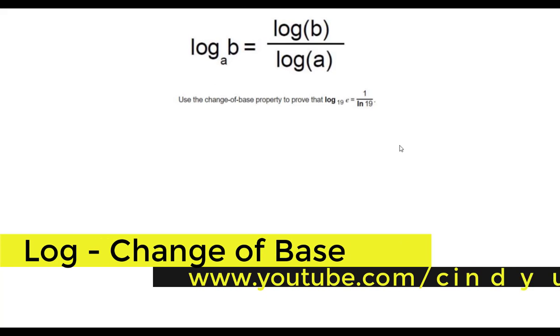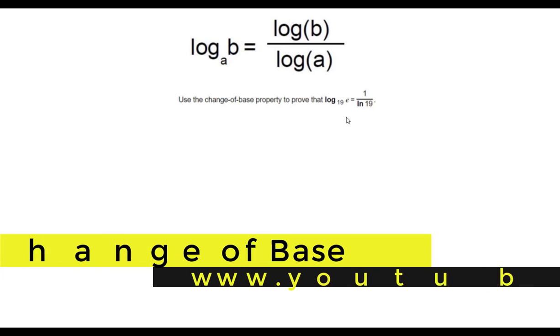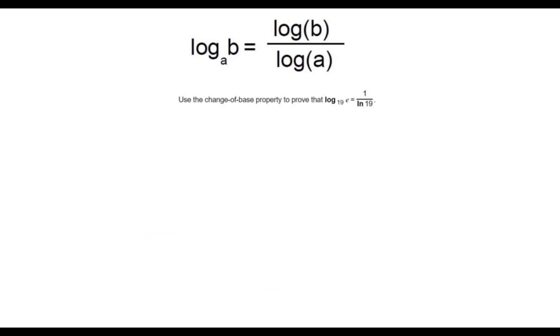All right, we have the change of base property for logarithms, and we want to prove this: log base 19 of E equals 1 over ln of 19.